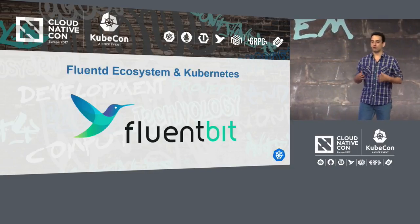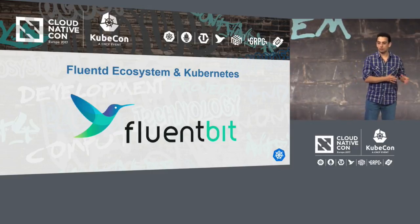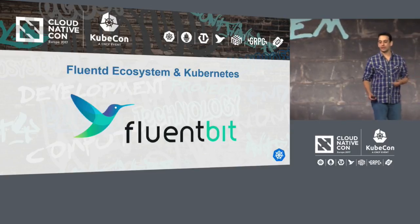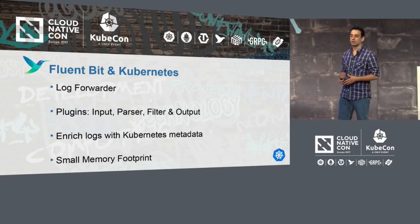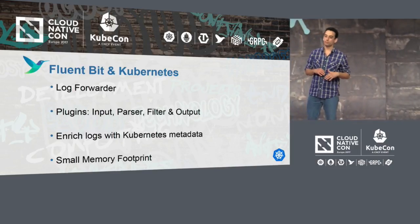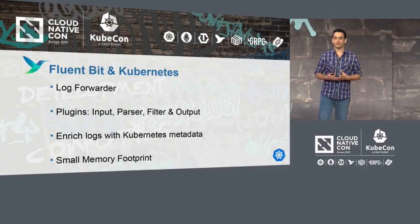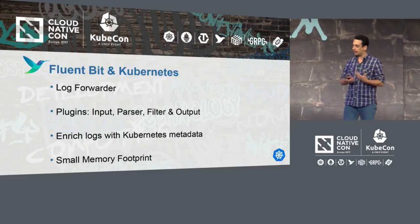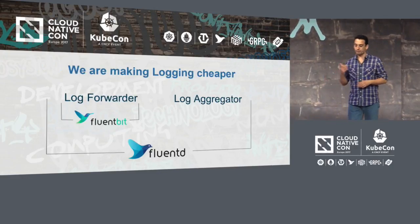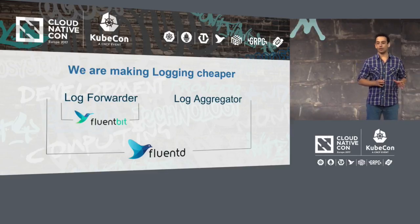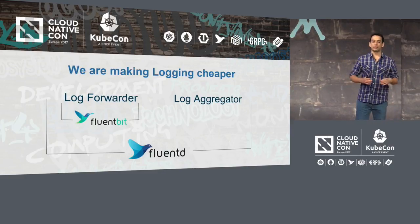We think a lot about performance. People said they sometimes had performance issues because they had too many logs and too much computing time. So we created a new log forwarder called Fluent Bit, which is fully written in C language. It has a really small memory footprint and can do most of the log forwarder features you can expect — collect the data, filter the data, parse the data, and send that data to some backend. We have log forwarders and log aggregators; FluentD is both. We can make logging cheaper by making the log forwarder more lightweight.